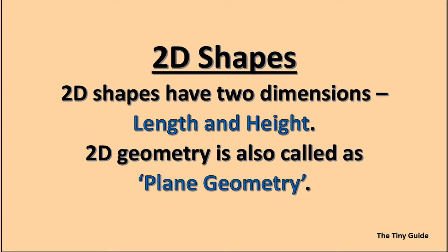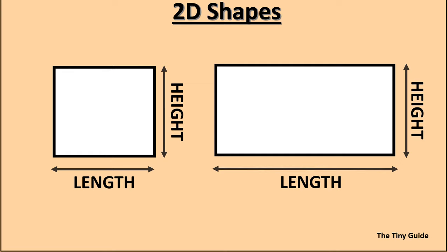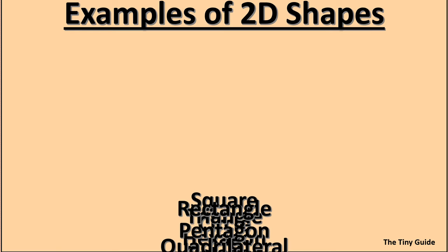First, we will see 2D shapes. 2D shapes have two dimensions: length and height. 2D geometry is also called plane geometry. Now we will see how to identify 2D shapes. These shapes have only length and height, as shown in the video.